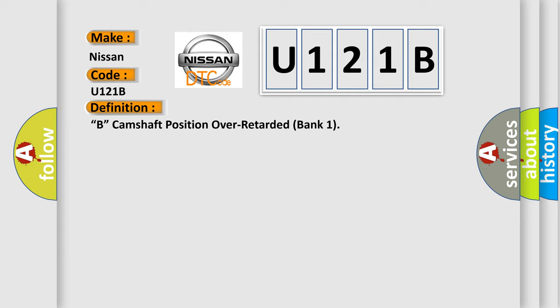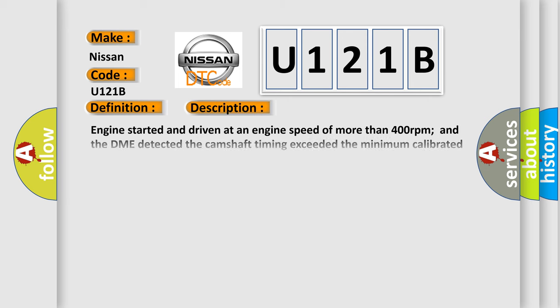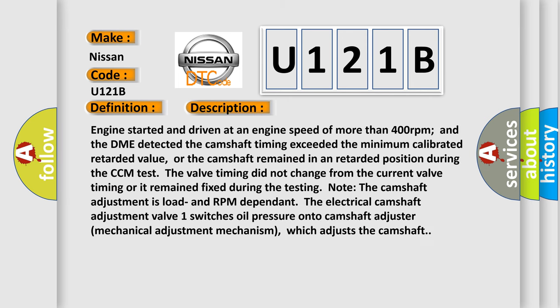Here is a short description of this DTC code. Engine started and driven at an engine speed of more than 400 RPM, and the DME detected the camshaft timing exceeded the minimum calibrated retarded value, or the camshaft remained in a retarded position during the CCM test. The valve timing did not change from the current position or remained fixed during testing. The camshaft adjustment is load and RPM dependent. The electrical camshaft adjustment valve switches oil pressure onto the camshaft adjuster mechanical adjustment mechanism, which adjusts the camshaft.